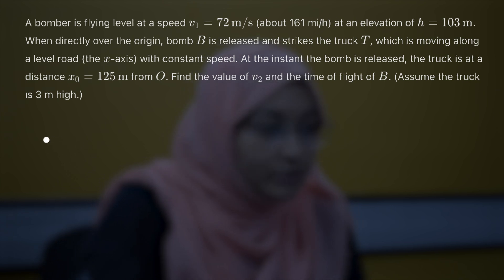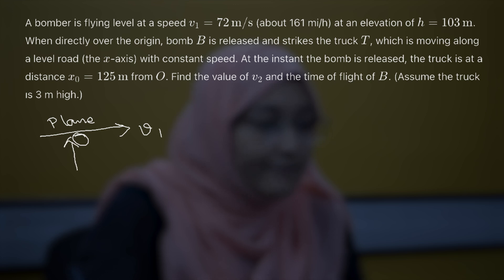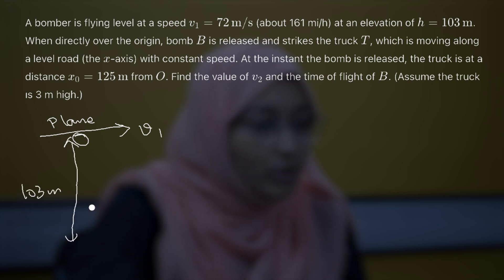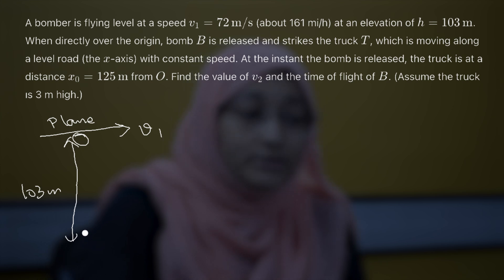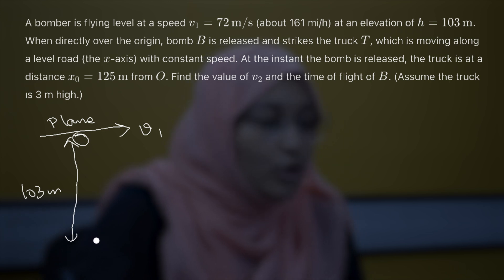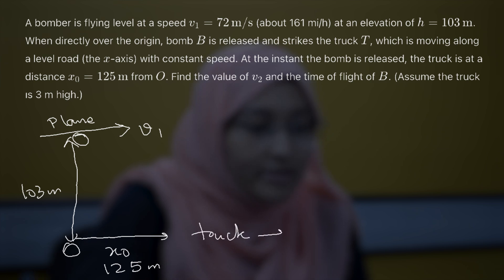So let's draw the bomber first. This is our plane and it is moving with velocity V1. A bomb is attached at the bottom of the plane and the height of the plane is given as 103 meters. The problem says when directly over, the bomb is released and strikes the truck, which is moving along a level road in the x-axis with constant speed. At the instant the bomb is released, the truck is at a distance of 125 meters from point O, so x0 equals 125 meters.